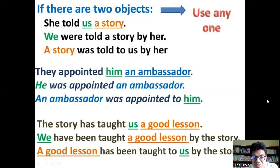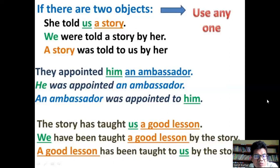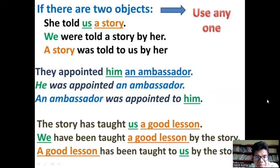If there are two objects, what do you do? Use any one of them. For example: 'She told us a story' — here we have two objects: 'us' and 'a story.' When you have two objects, you can use one of them, but it will be easier if you use the one that represents a person. So: 'We were told a story by her' — here we use 'us' as the target object moved to subject position.